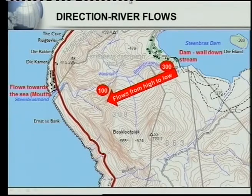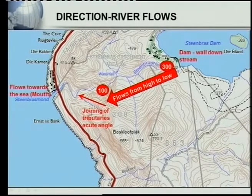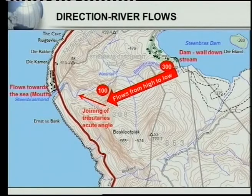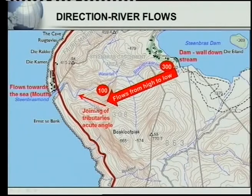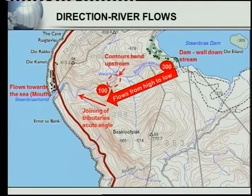Also look at the joining of the tributaries. Here's the Steenbras River going down and here's the tributary — you can see it joins at an acute angle. A tributary always joins in the direction in which the river flows. Looking at the tributary and the Steenbras River here, the river can only flow in that direction. The joining of the tributaries is very important.